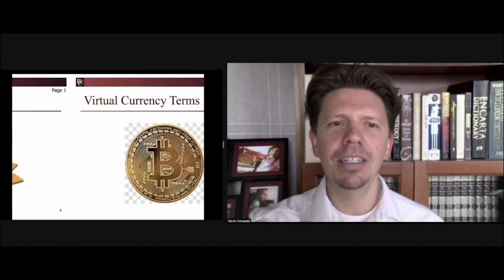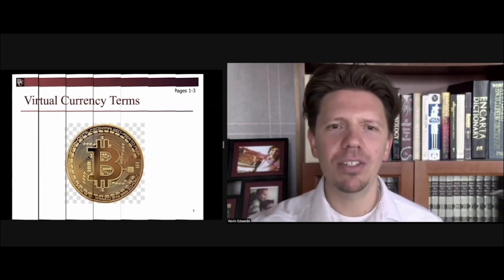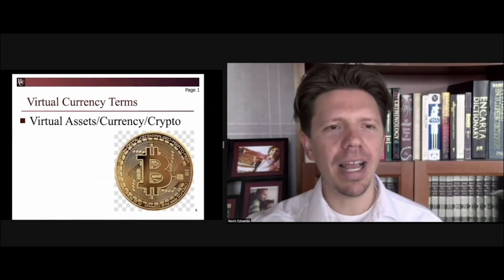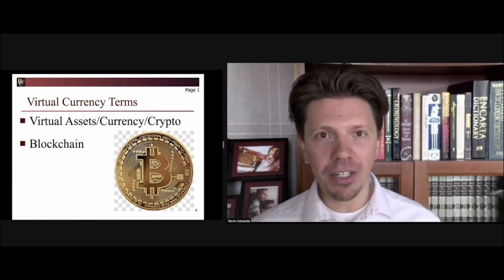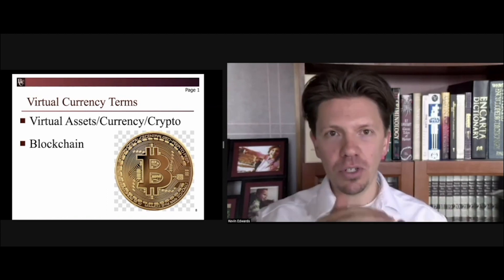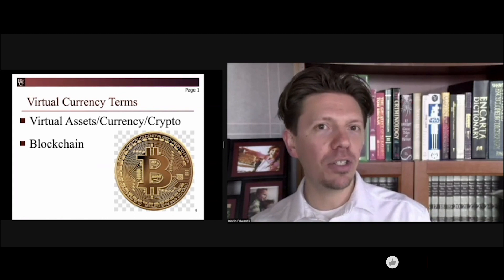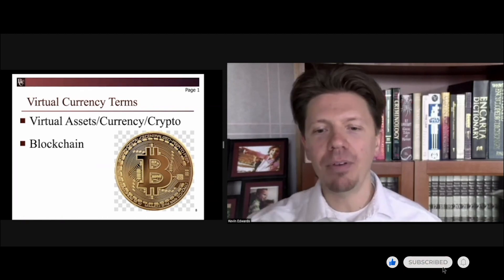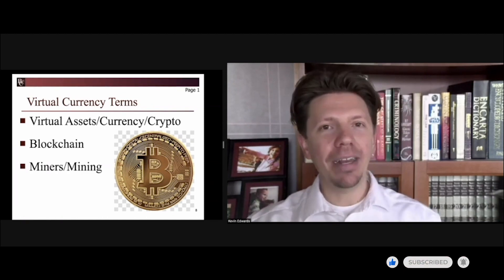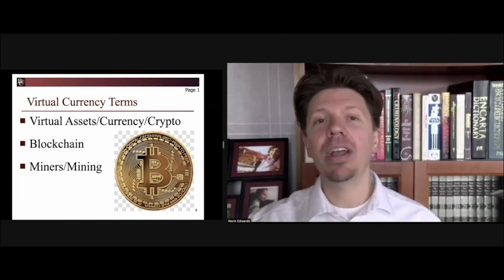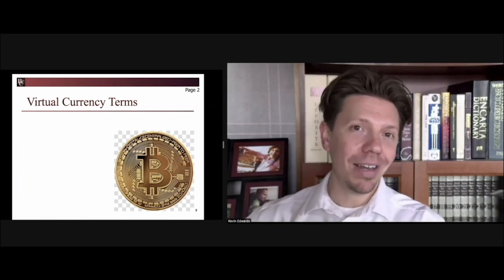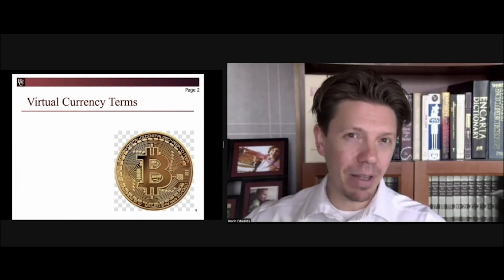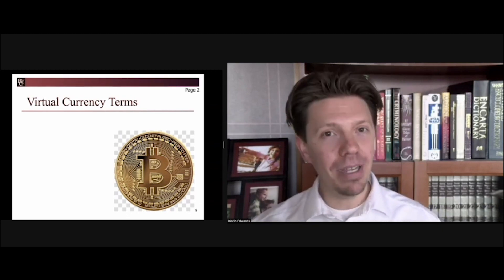Terminology — we want to make sure we understand what these terms are. A virtual asset, number one, is a virtual currency, something that is a digital representation of value. Blockchain is the electronic ledger used to track how transactions work and which accounts have what type of value. Miners are the ones actually working to verify those transactions. Let's make sure we've got all of these terms down, because when we start talking about risks and specific things to be on the lookout for, we all need to be on the same page.